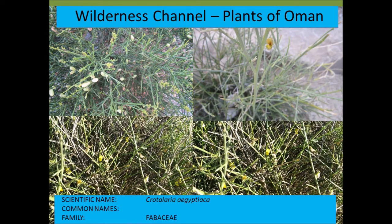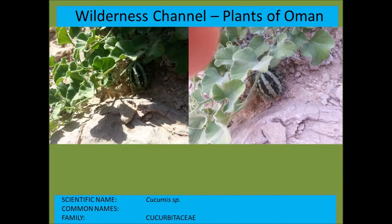Crotalaria aegyptiaca is one of many small bushes with yellow flowers and can often be confused with plants like Dipterygium glaucum and other yellow-flowered species such as Ochradenus.